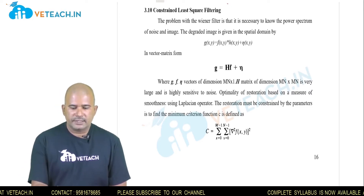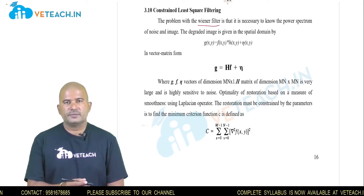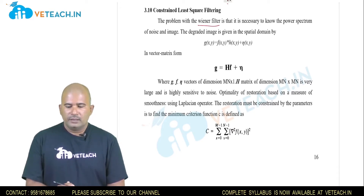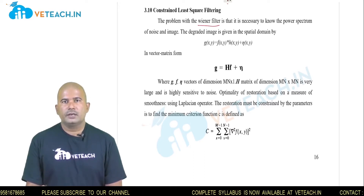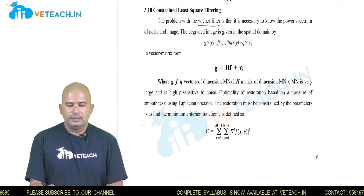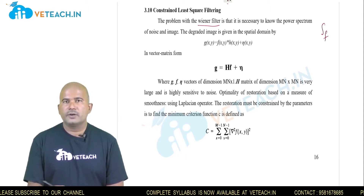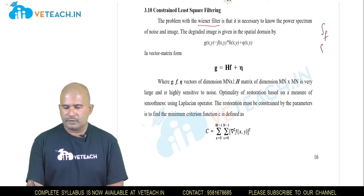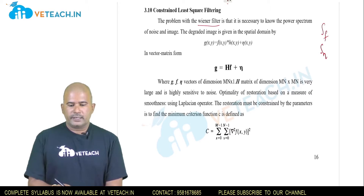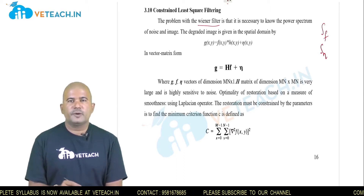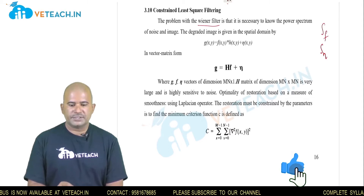In the previous case, as we discussed in the Wiener filter, the power density spectrum of the noise and image should be known in order to find the Wiener filtering. We need the knowledge of the power density spectrum — that is, Sf of the image and the power density spectrum of the noise. But here, without having the knowledge of power density spectrums, we can still use the filtering operation.